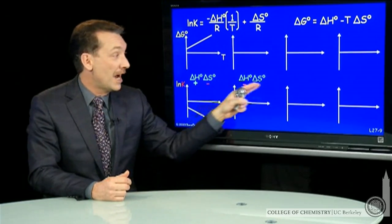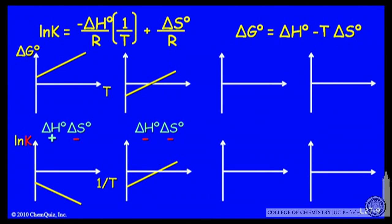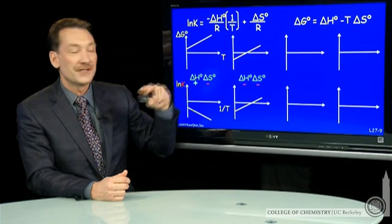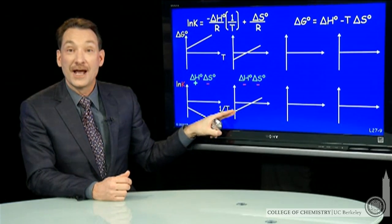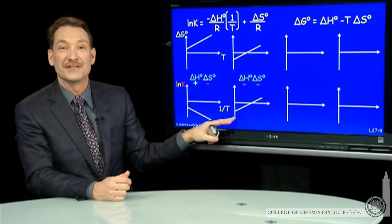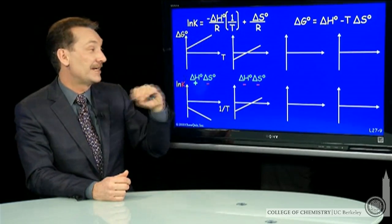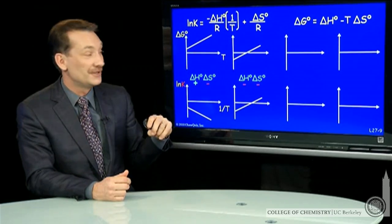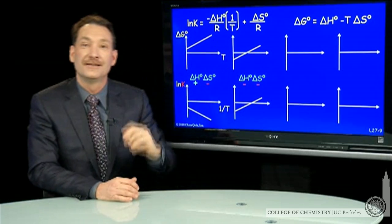How about if they're both negative? Interestingly, the two plots are qualitatively similar — both have negative intercepts and positive slopes. Negative intercept for delta G because delta H determines the intercept. Negative intercept for ln K versus 1 over T because delta S determines the intercept. And they both have positive slopes because for ln K the slope is determined by the opposite of delta H, and the slope for delta G is determined by the opposite of delta S.